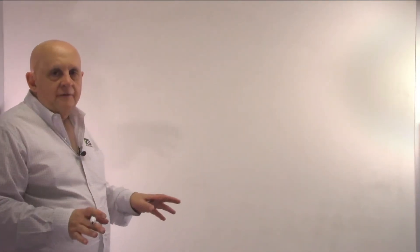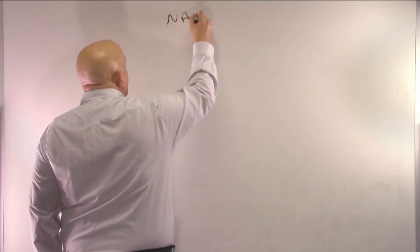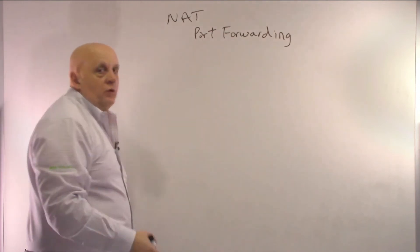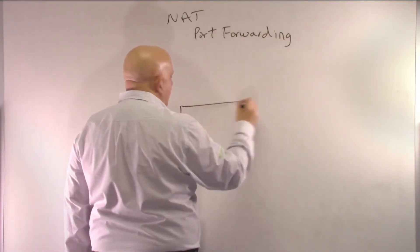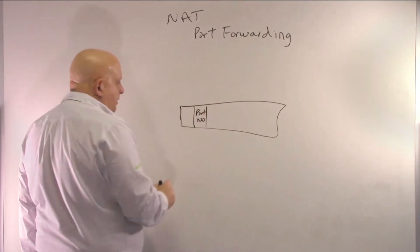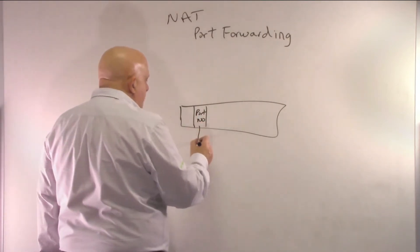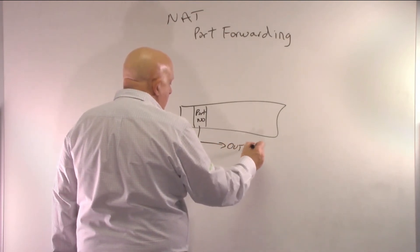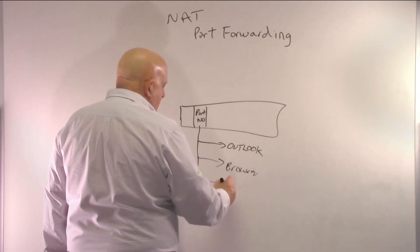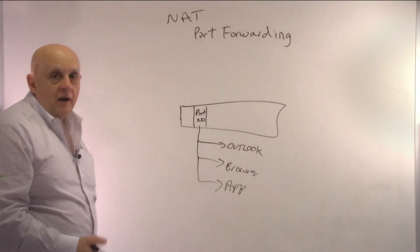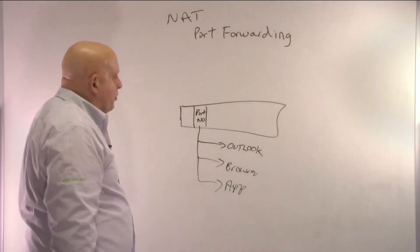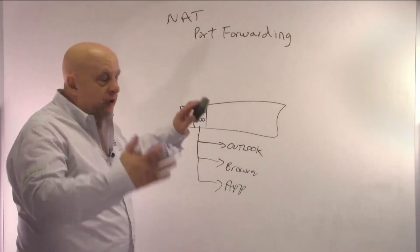Now we're going to talk about the second kind of NAT, the second most popular: NAT port forwarding. Let's make sure we all understand what a port number is. When an IP packet comes into a computer, there's a port number field buried in there. That port number is a little director — it says send this to Outlook, or send it to the browser application, or some other app. There are port numbers for Ethernet/IP, Profinet, Modbus TCP. All different kinds of apps have port numbers, and that's what we're going to use in port forwarding.